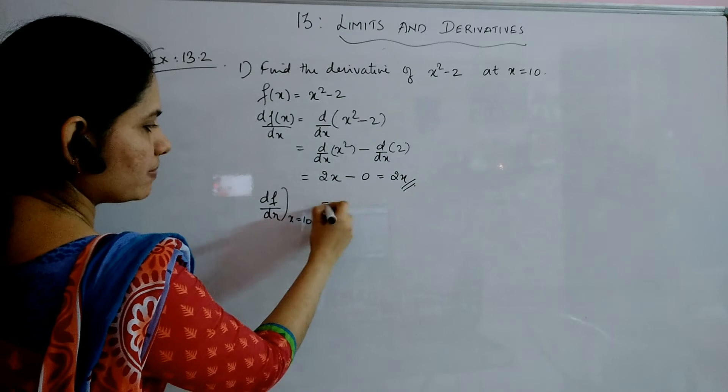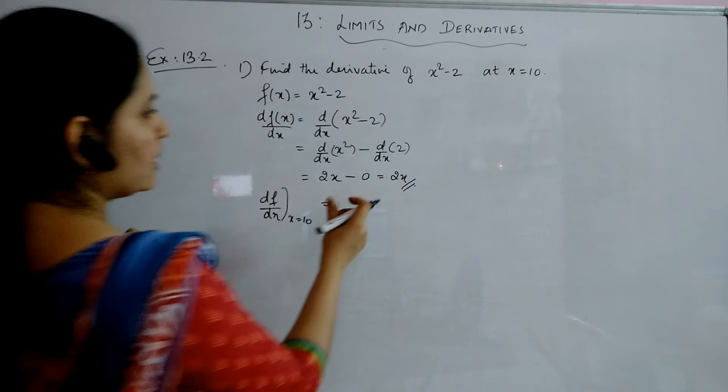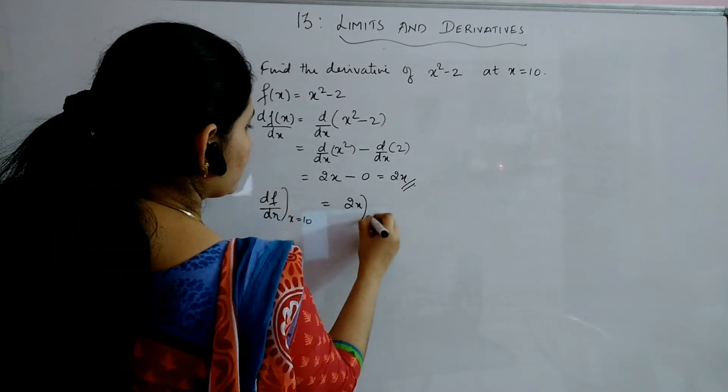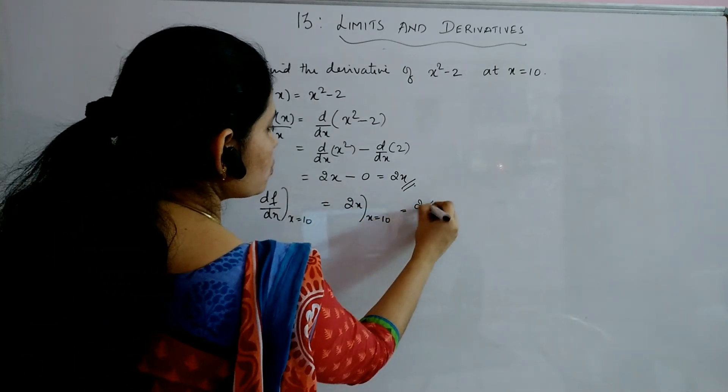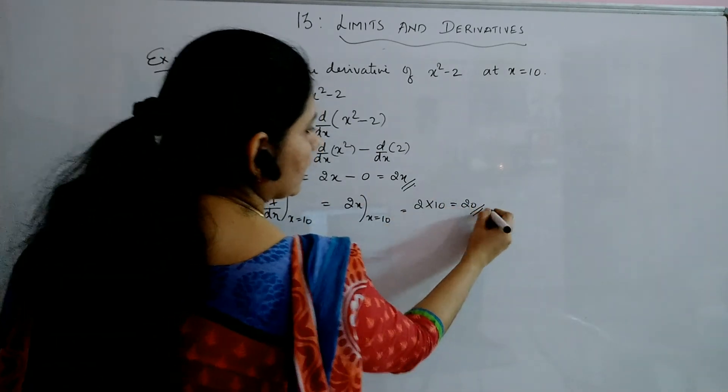At a point, we will mention like this. In notation time, we have just studied this. We will write like this and this will give you 2x at the point x equal to 10, which is 2 into 10. So I have replaced x with 10. So the answer is 20.